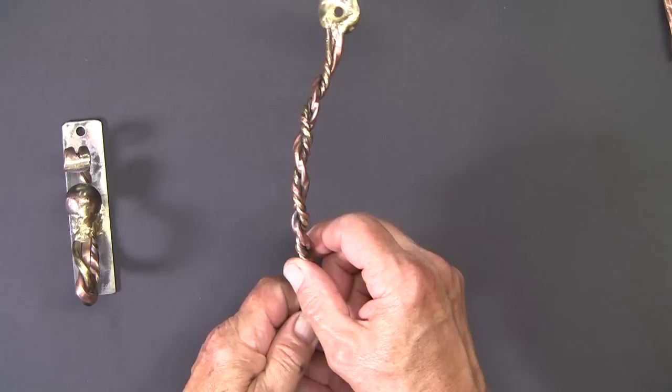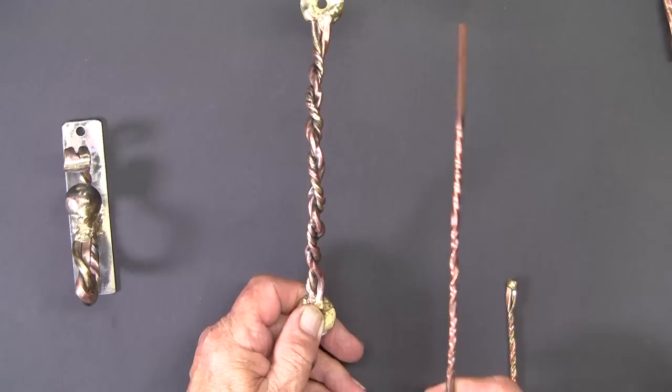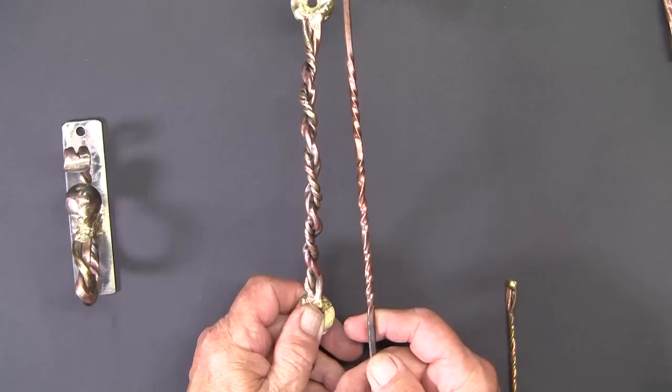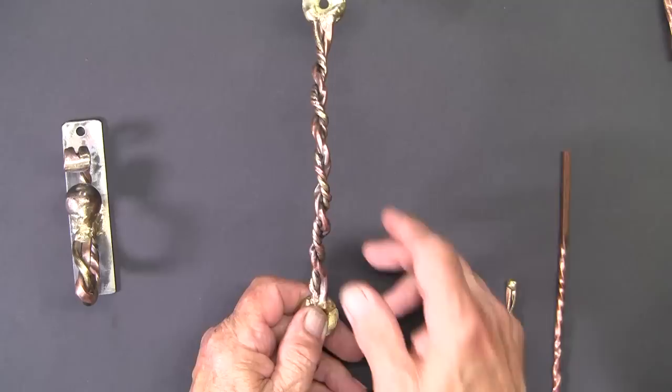Now this one is a bit different. I had twisted an 8 gauge copper wire and a brass wire together, then twisted a little heavier copper wire and twisted them all together. Again, opening up more options.